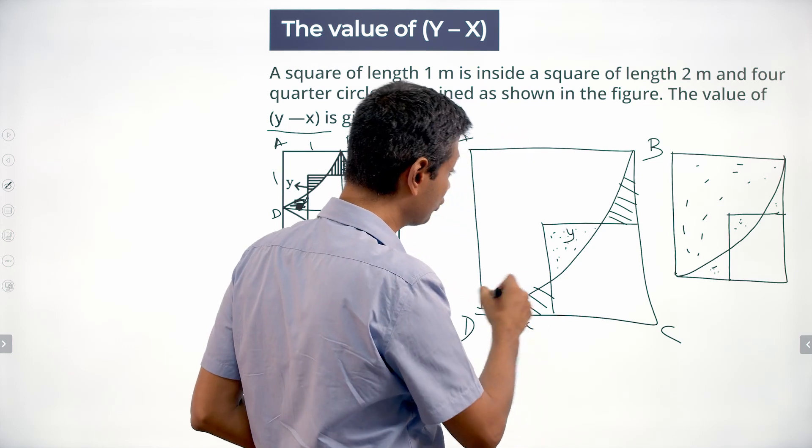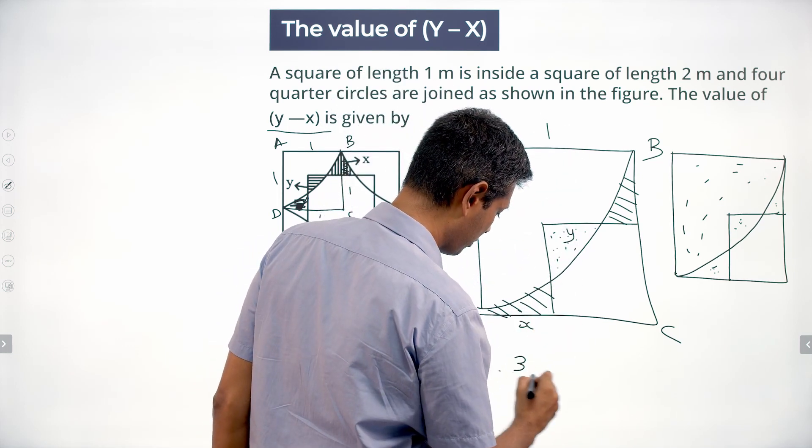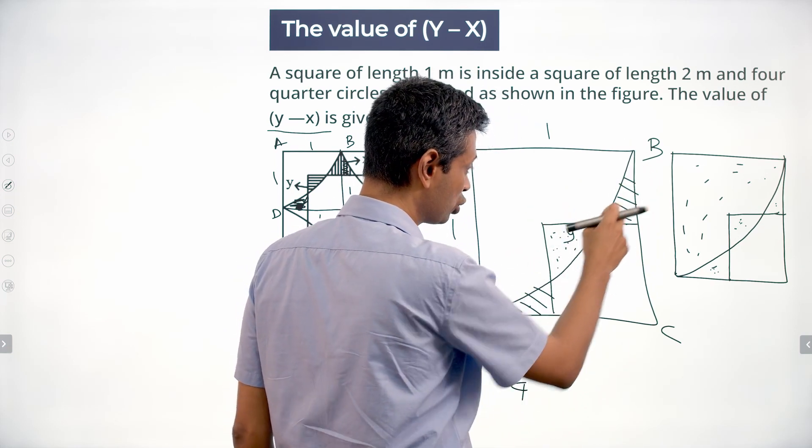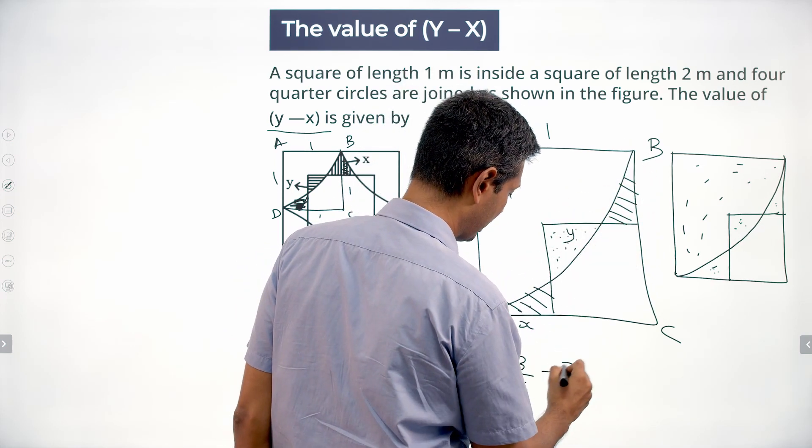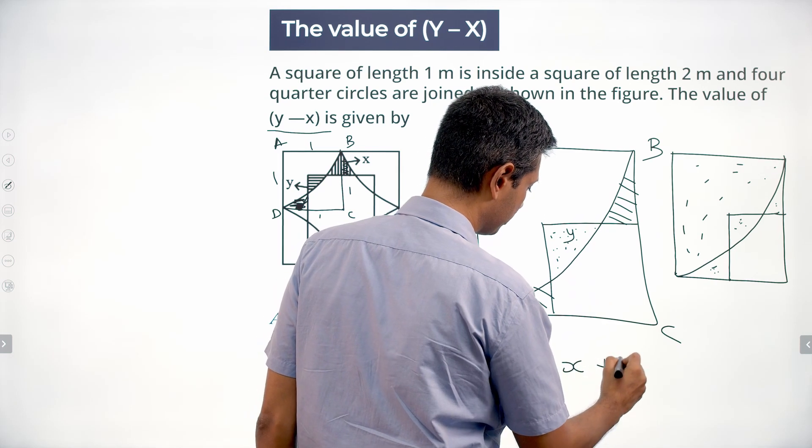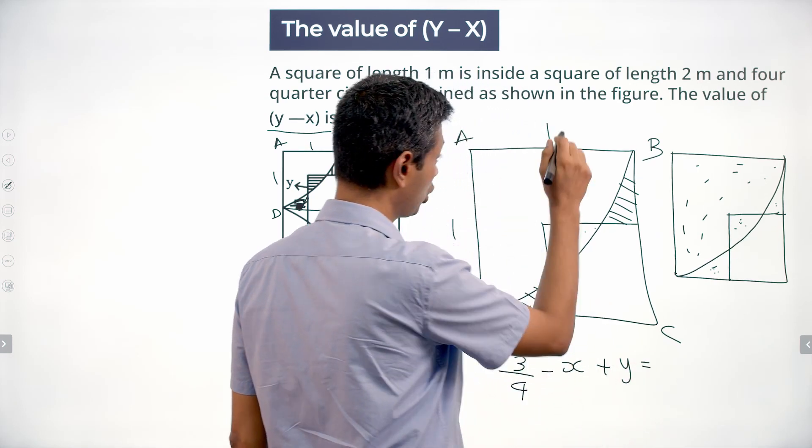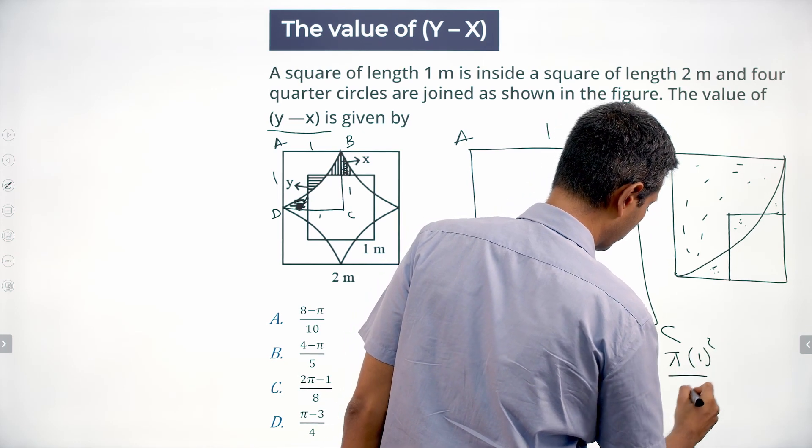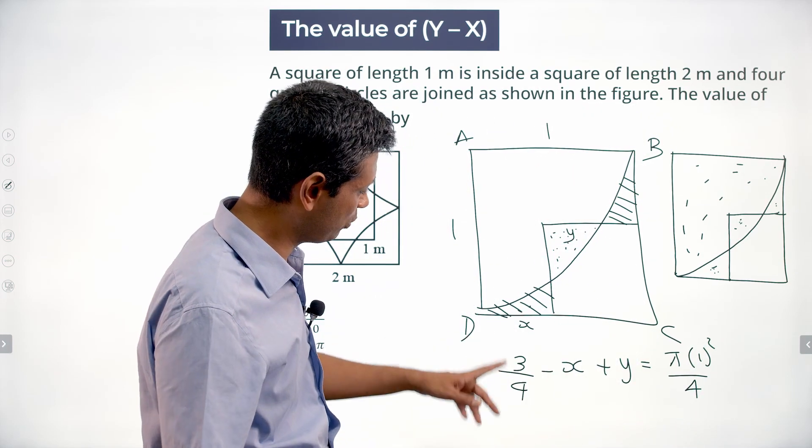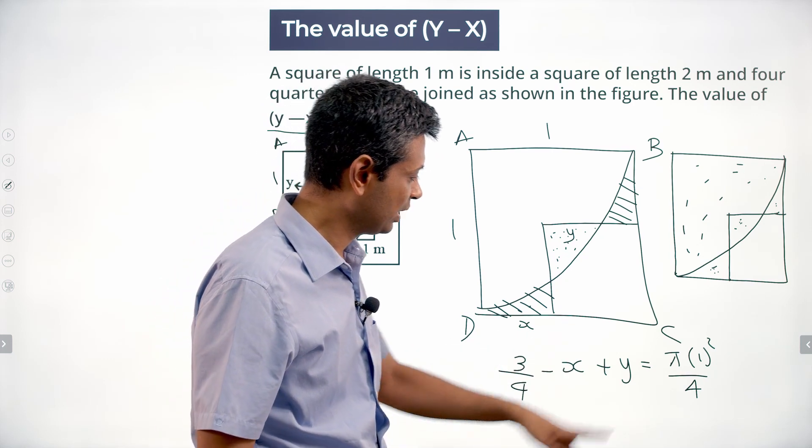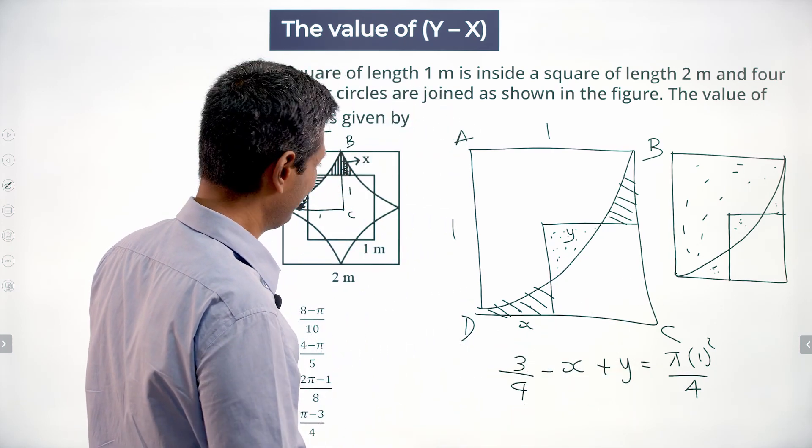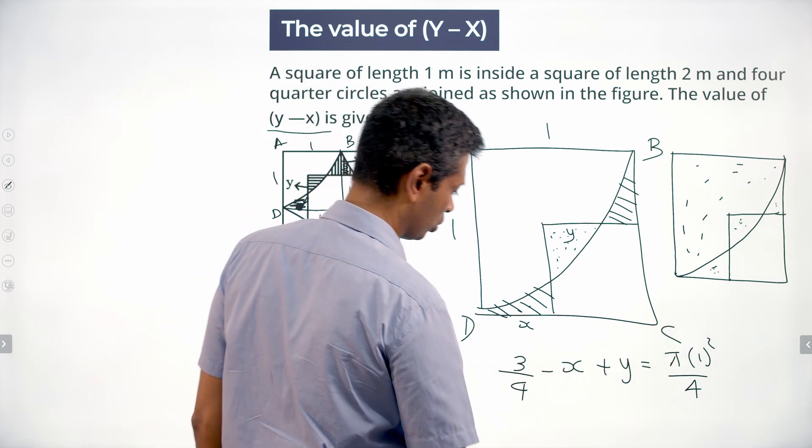Area of three quarters of a square of side 1 is 3/4. From this 3/4 I subtract these two, remove x and add y, I'll get area of the quarter circle. Quarter circle is π × 1² / 4. Done. 3/4 - x + y = π/4, or we want to find y minus x. Y minus x goes that side.